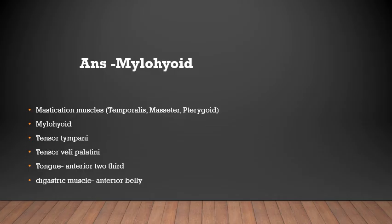Correct answer: mylohyoid. Derivatives of the first branchial arch are: muscles of mastication, mylohyoid, tensor tympani, tensor veli palatini, anterior two-thirds of the tongue, and anterior belly of the digastric muscle.